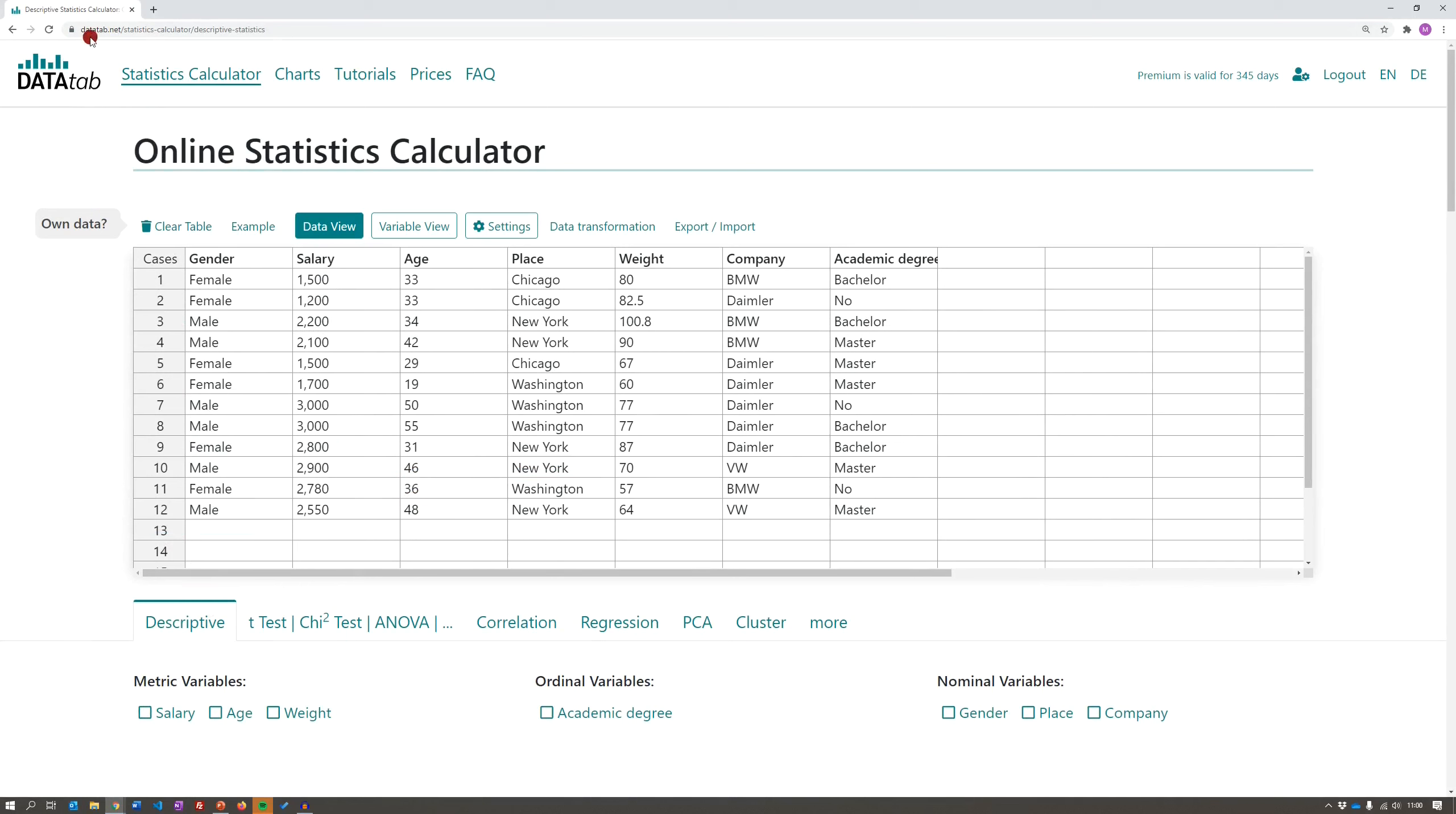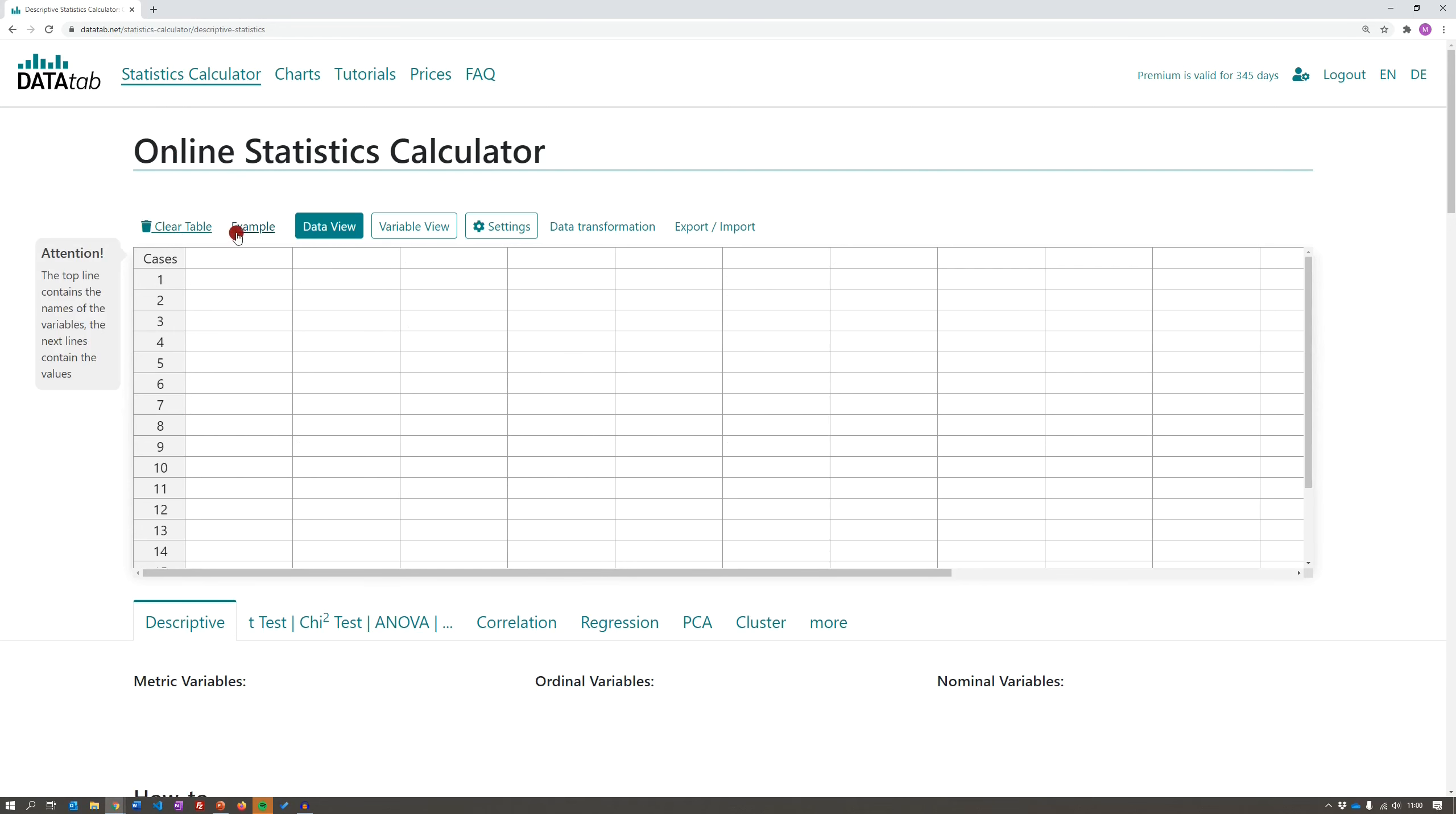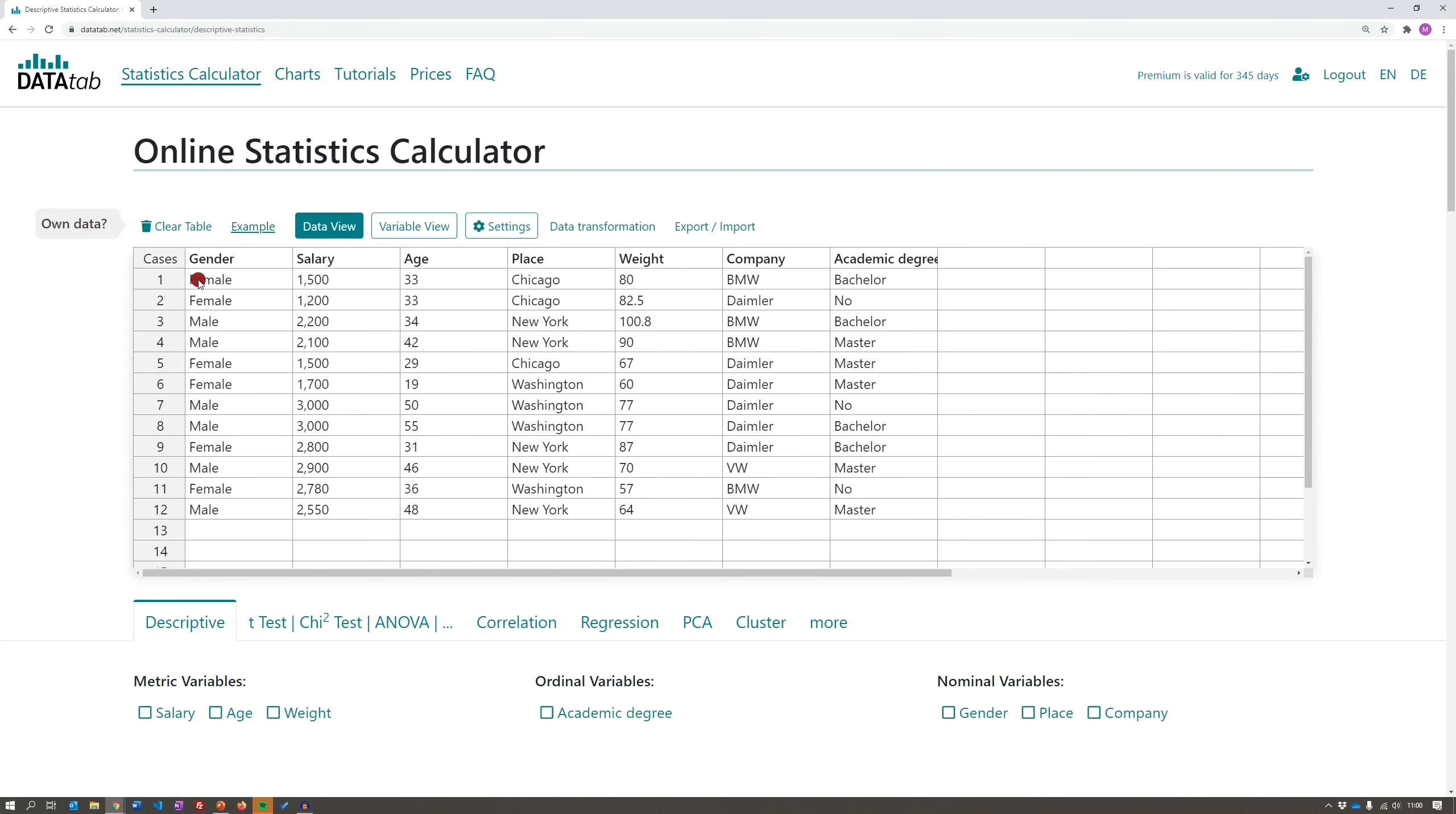And I will show you now how you can easily do it online. In order to do this, please visit datatab.net and click on the statistics calculator. If you want to use your own data, just click on clear table. I will use the example data now.